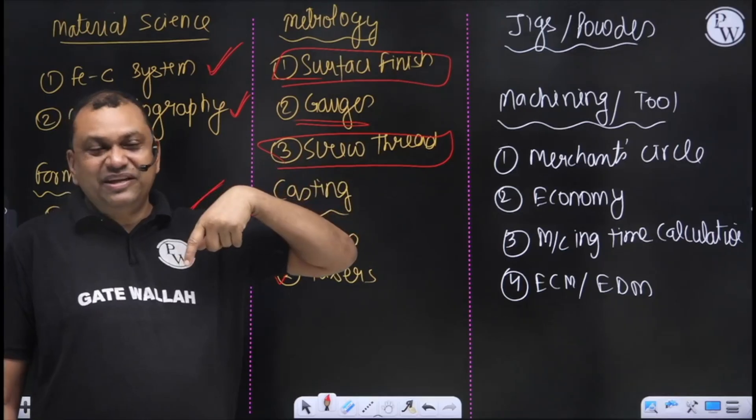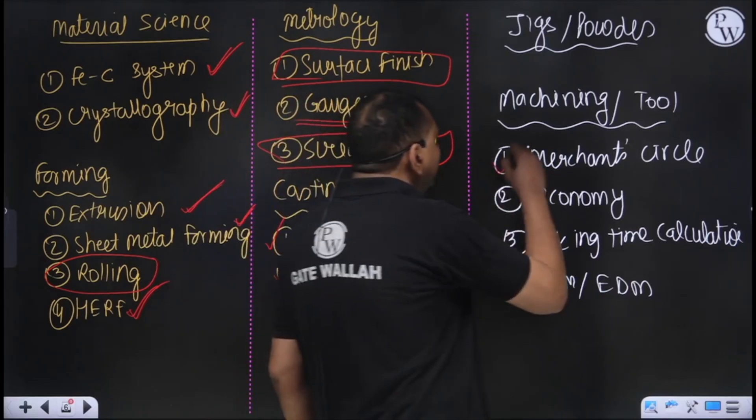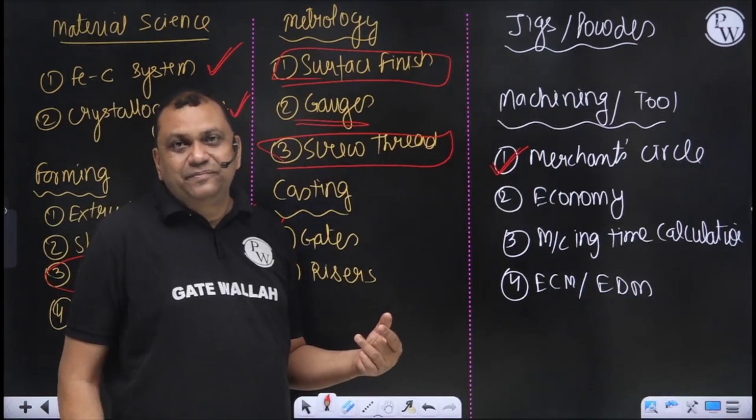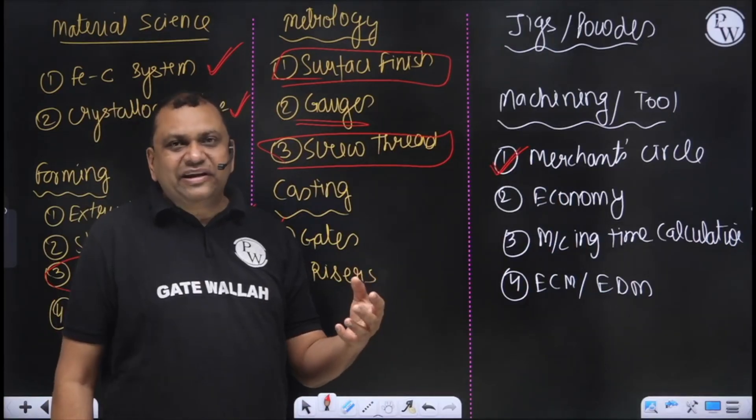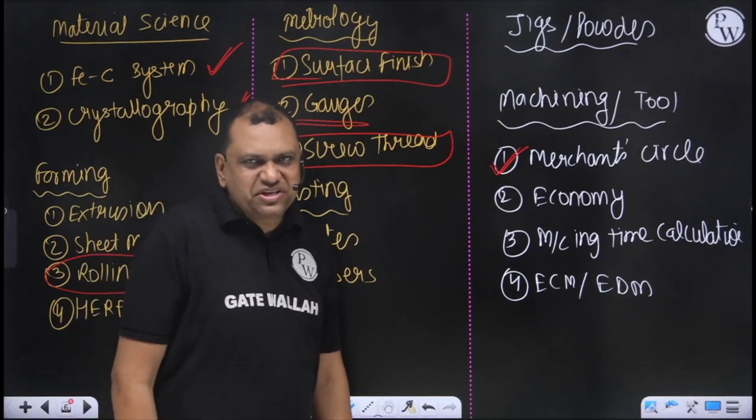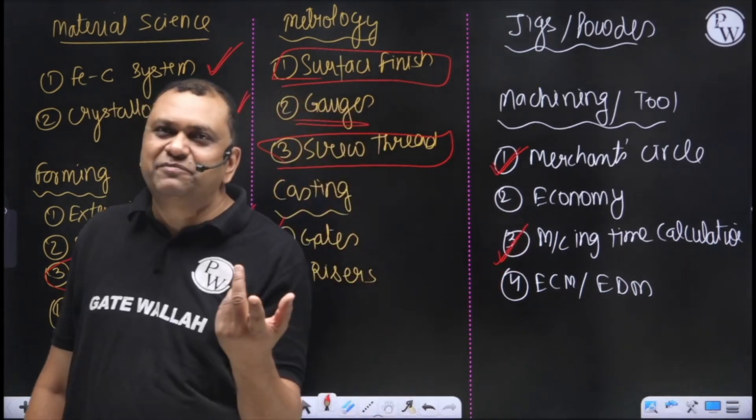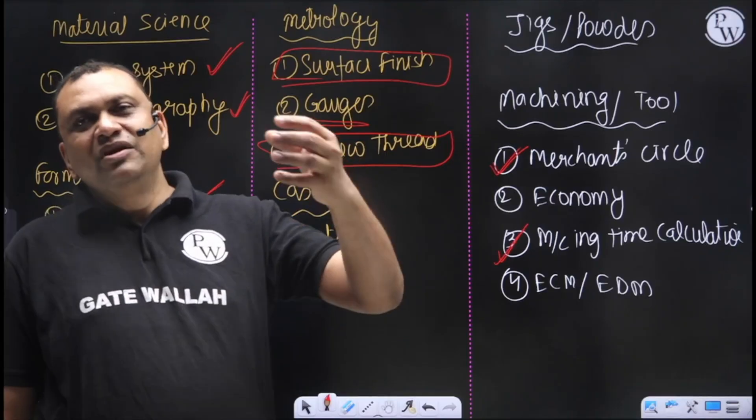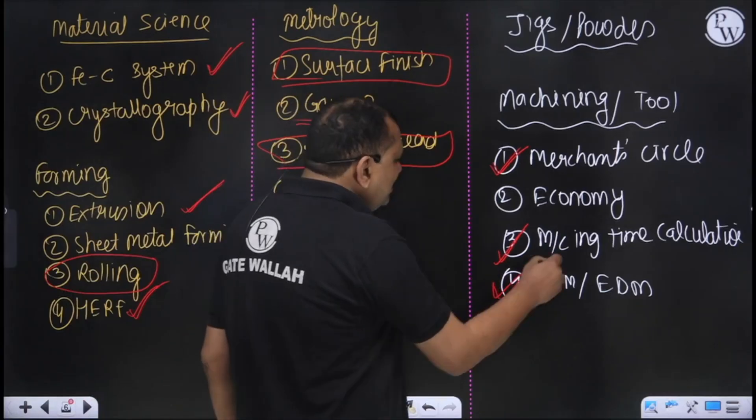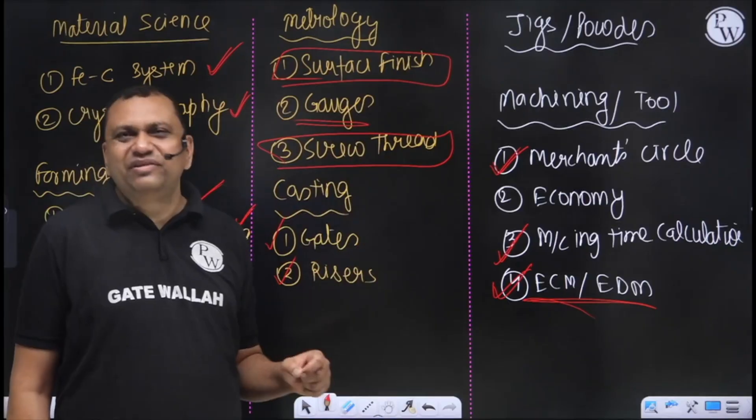As far as machine tools and machining, merchant circle - merchant circle calculation and then economy, like what is the optimum cutting speed for minimum cost or maximum productivity. That analysis - I feel one question will come from that section. Then machining time calculation - almost every year a question comes from machining time calculation, either milling or shaping. One question every time comes. I'm also expecting unconventional machining, ECM and EDM. Some numerical may come either from ECM or EDM.